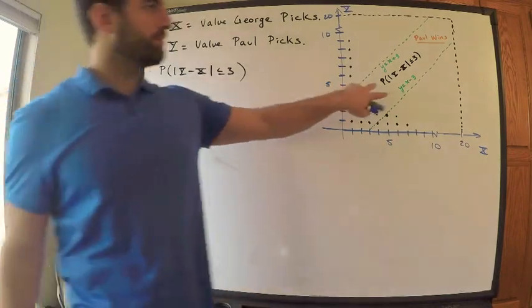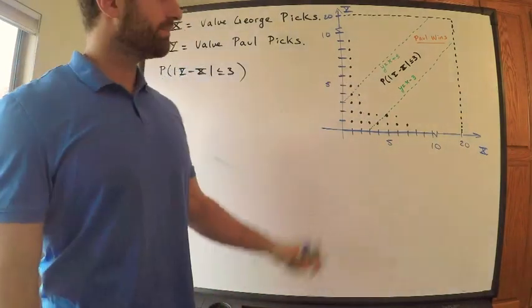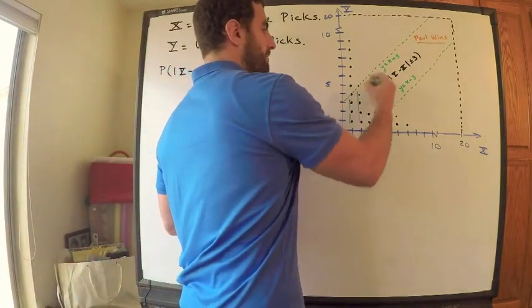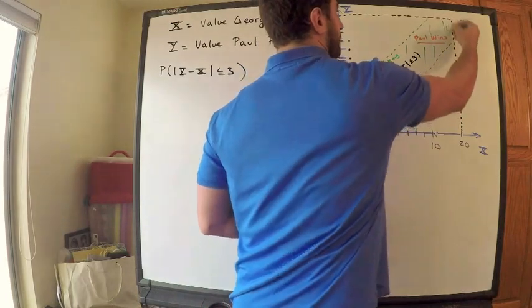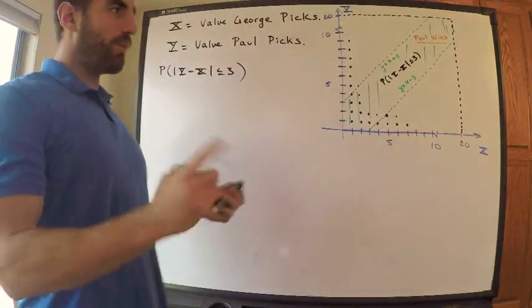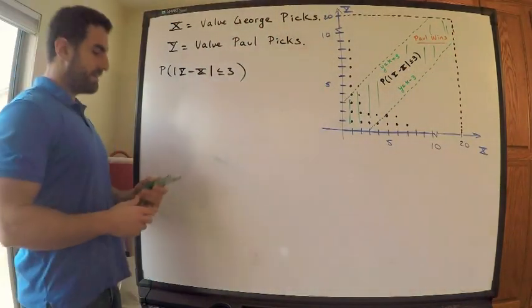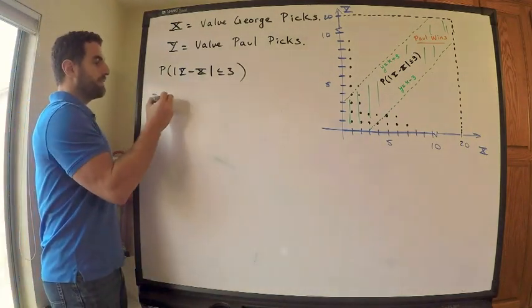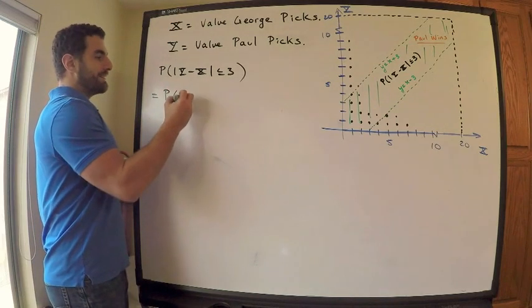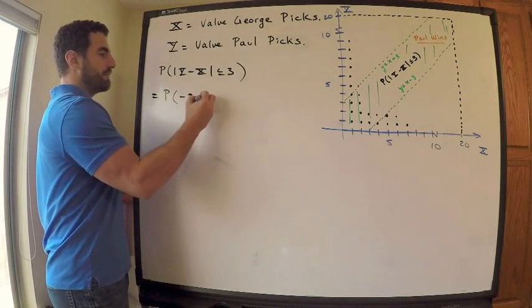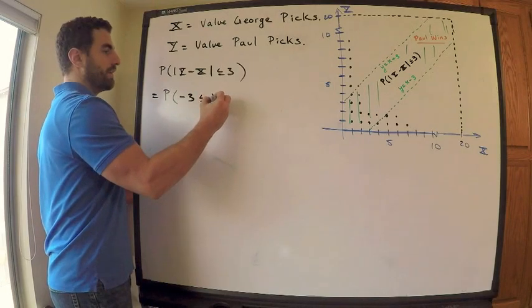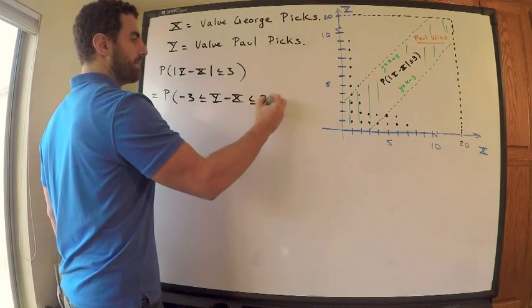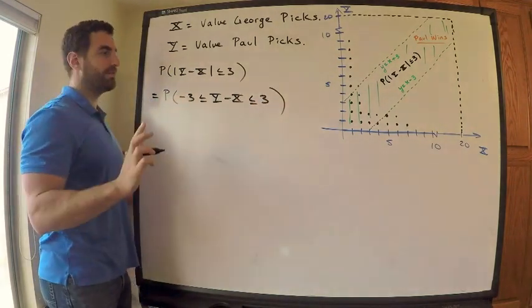I have the picture over here representing what this is. It's this region right here, this green, is actually the probability that Paul wins. I want to compute that. Now, why is that true? That's because if you go to the definition of absolute value, then that means that this is equal to the probability that negative 3 is less than or equal to Y minus X is less than or equal to 3. This is by definition of what absolute value means, so nothing fancy.